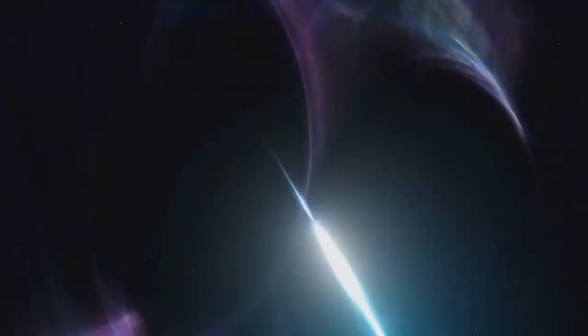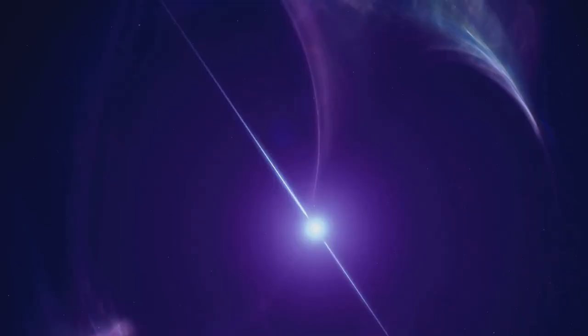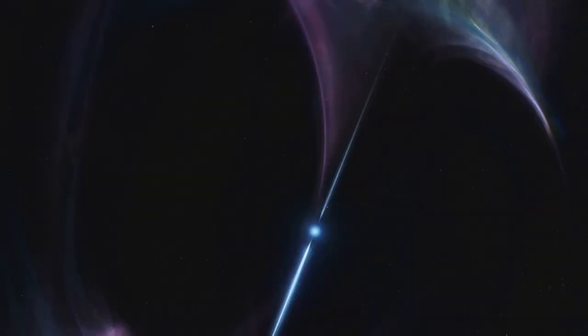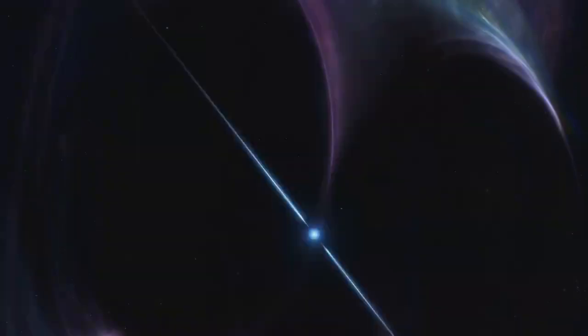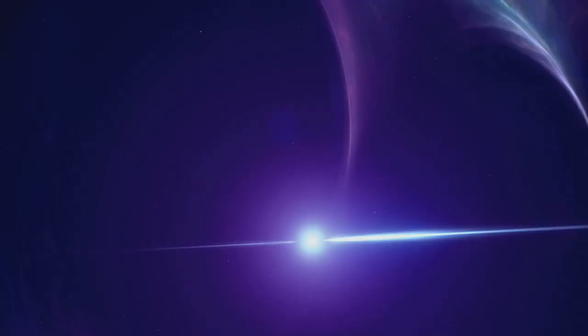If the remaining core is extremely dense, it forms a neutron star. But if the core is even more massive, it collapses completely to form a black hole, a point in space where gravity is so strong that nothing, not even light, can escape.